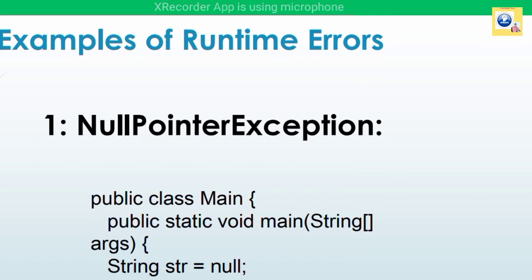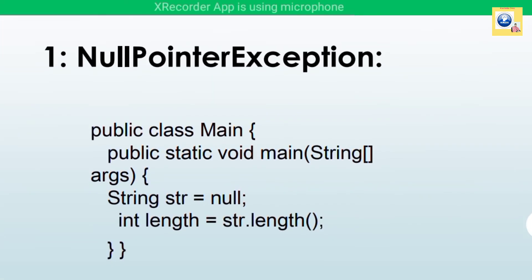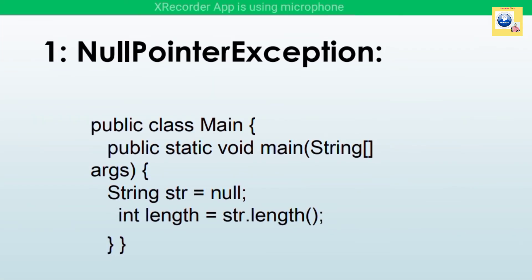Now let's talk about runtime errors. One common example is a NullPointerException — for instance, a string 'str' is set to null and you try to determine its length using the length method. If a string is null it has no value or characters, so nothing will be returned, and that creates an exception at the time of execution.